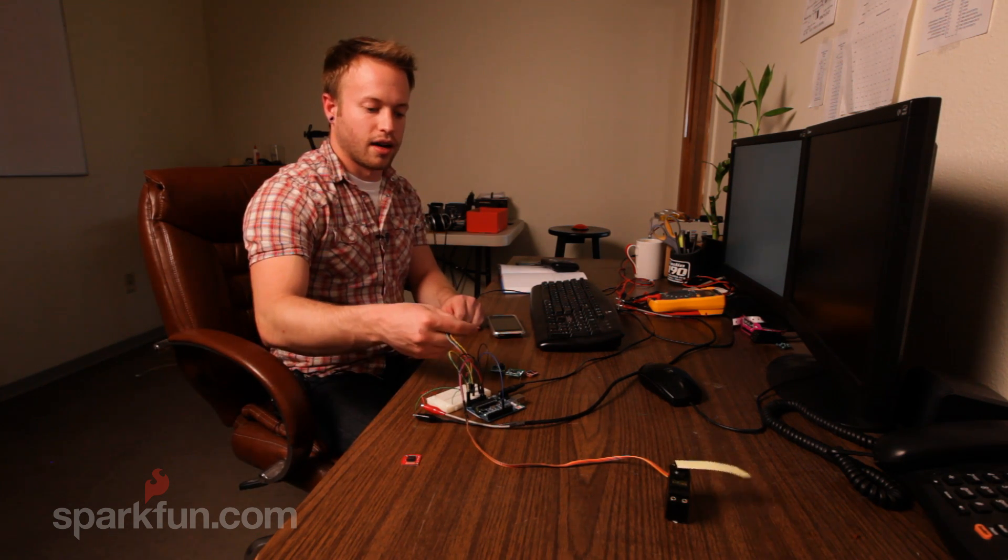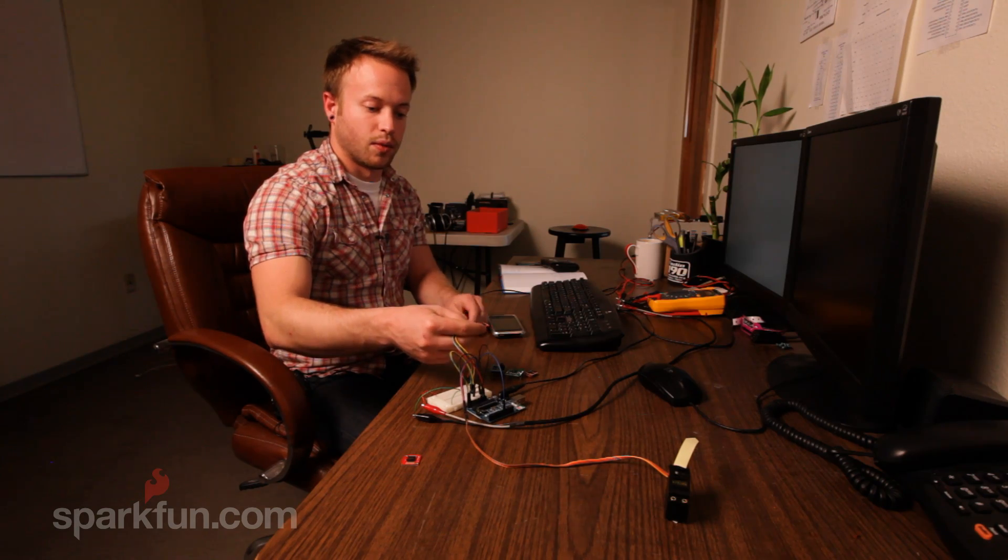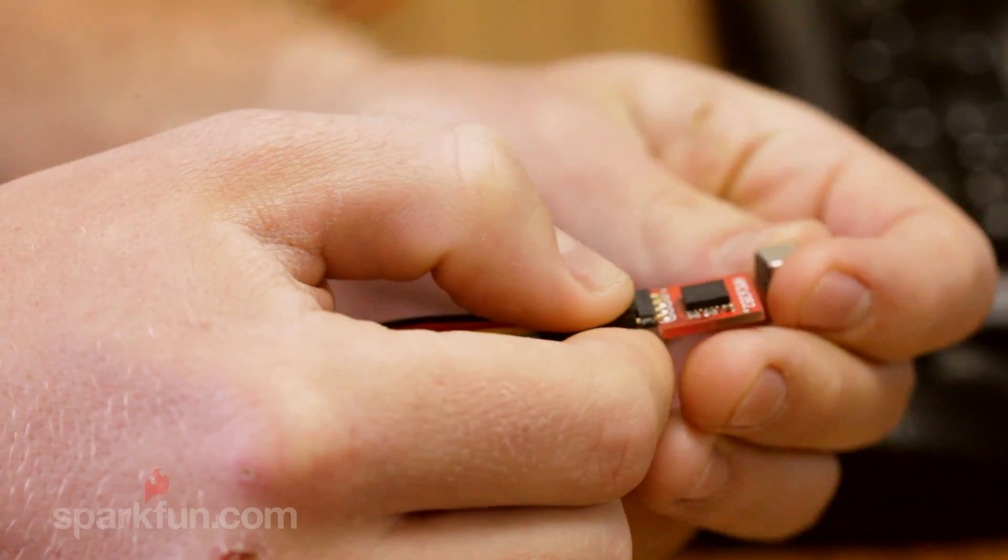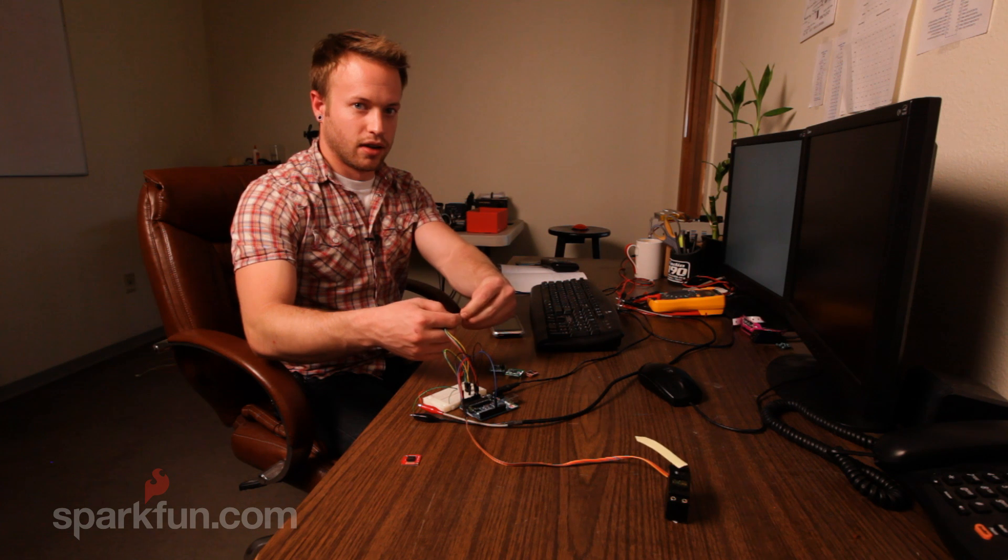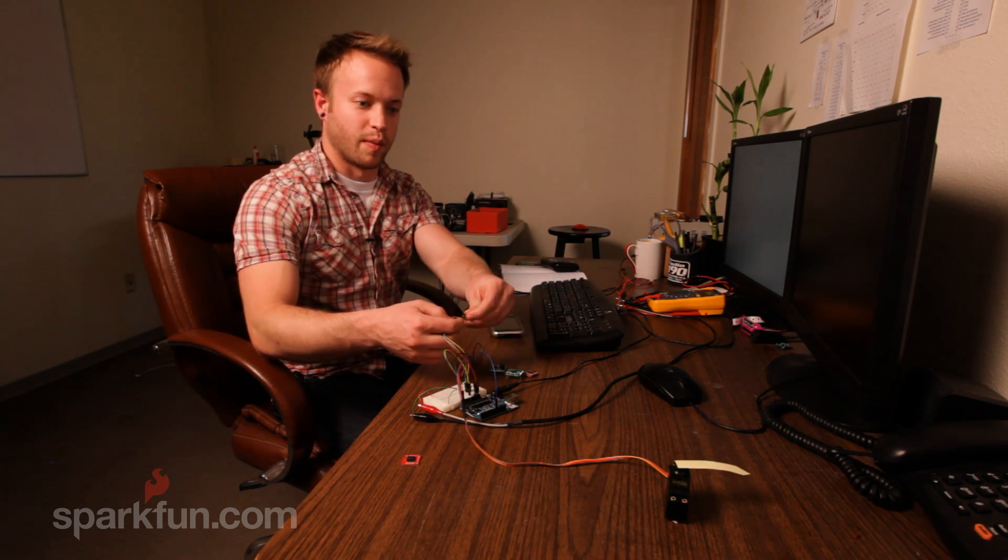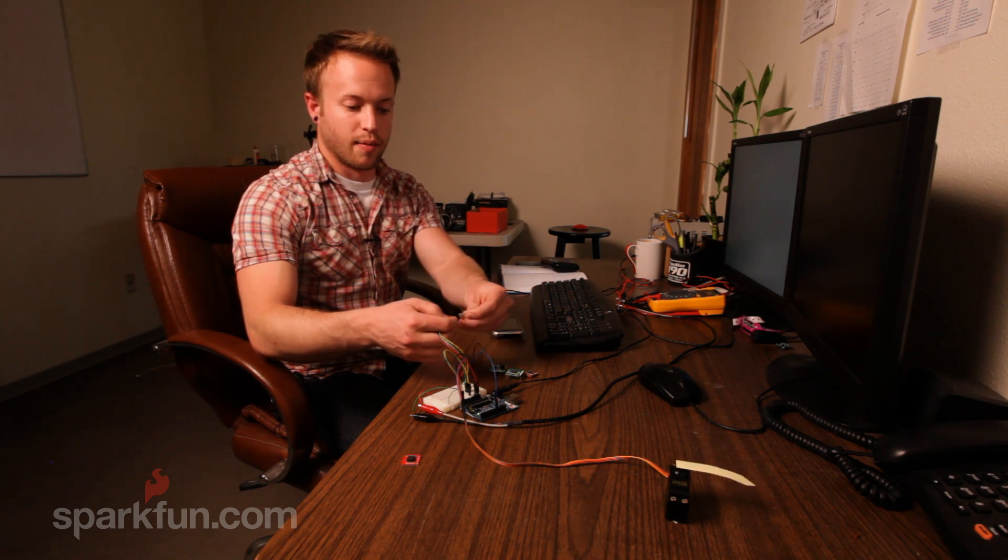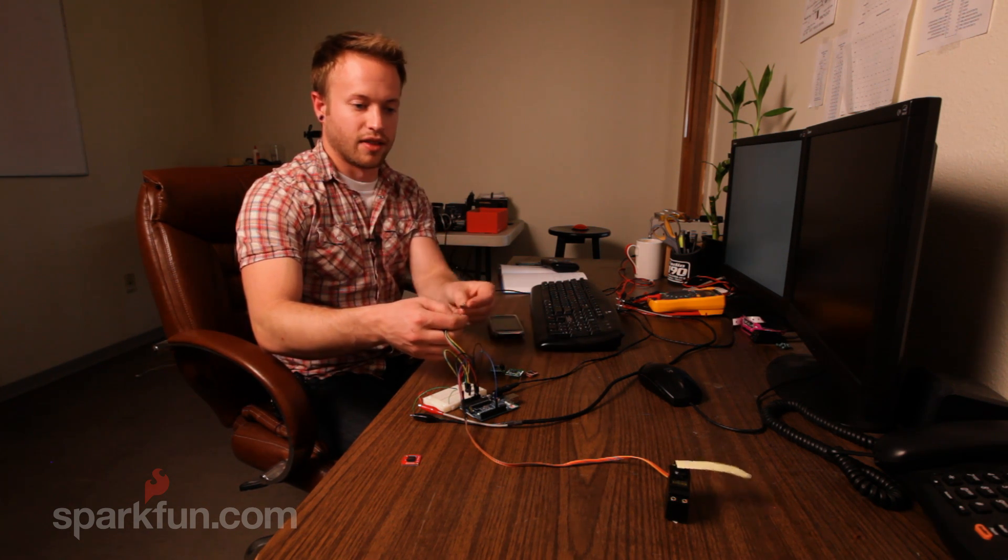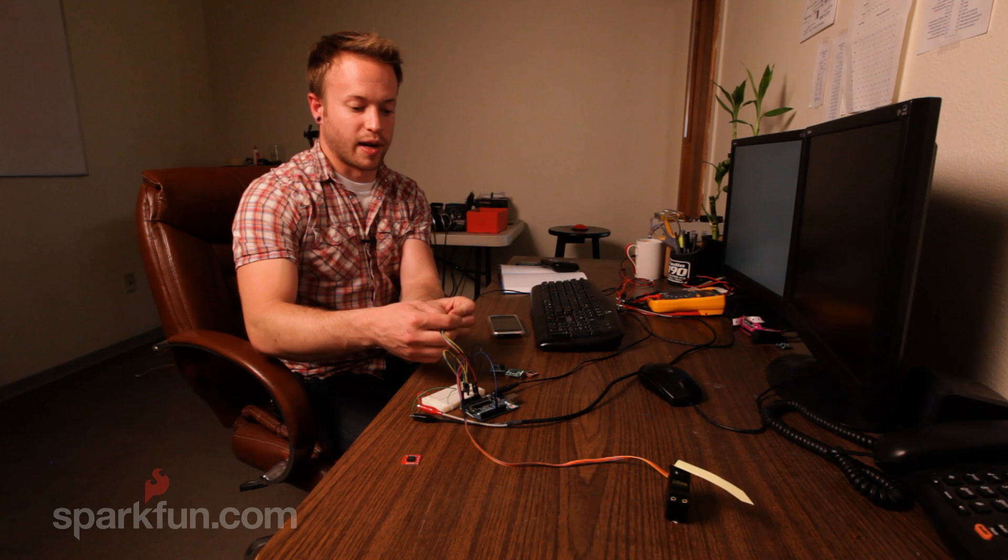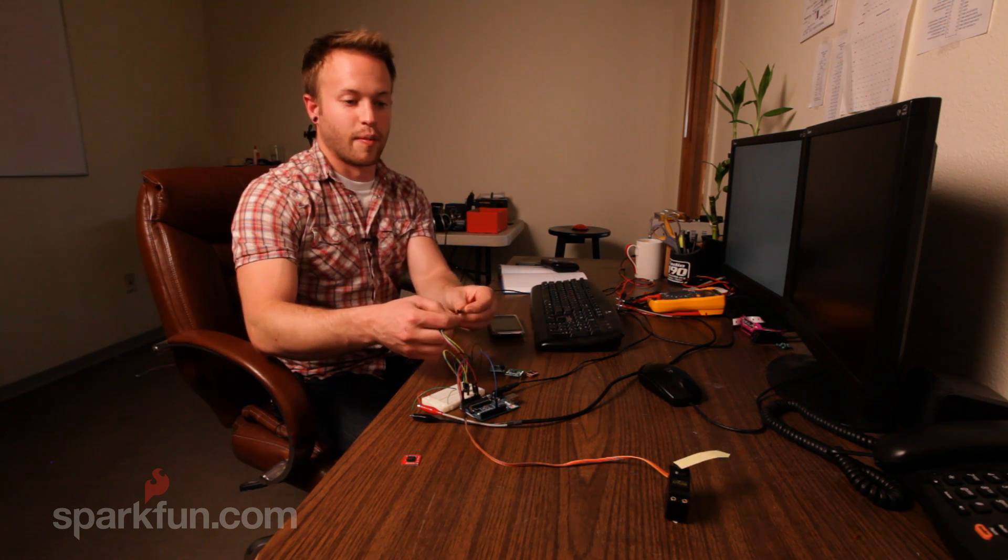Also, when this magnetometer comes within the range of a magnet, it starts to lose its bearings because it now is looking for north from the magnet. So I move it around, and it knows that this is the strongest magnetic field in the area, and it's detecting a magnet instead of north.